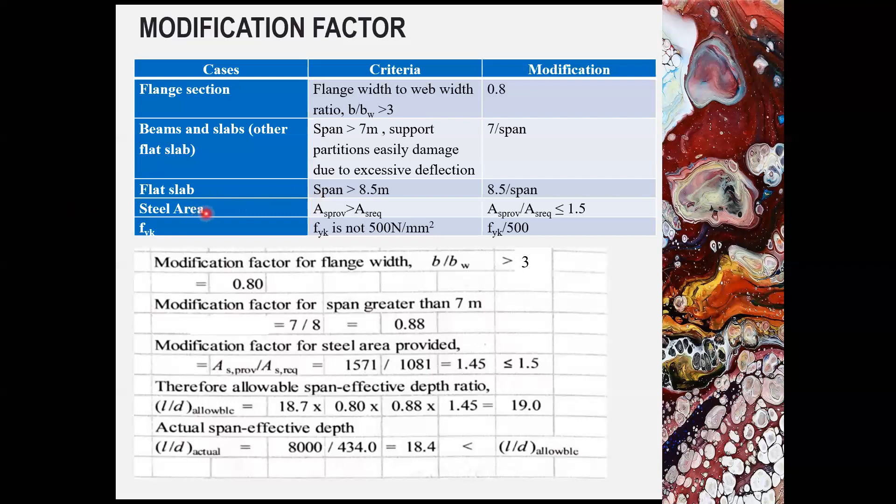For the steel area, if the as provided greater than as required, which is very common in the design, you need to multiply with the modification factor of as provided divided by as required. And this value cannot be more than 1.5. If it is more than 1.5, modification factor of 1.5 shall be used.